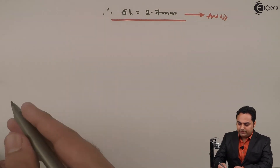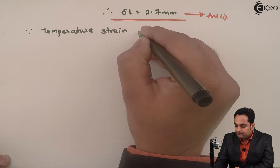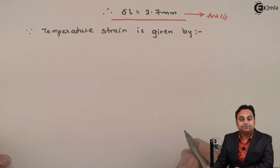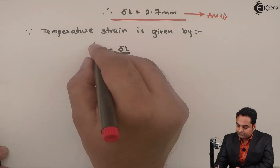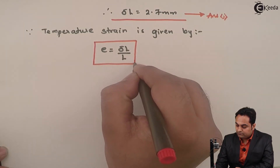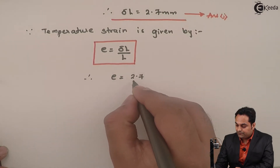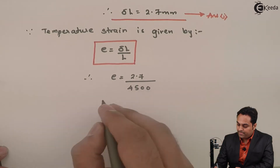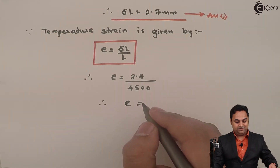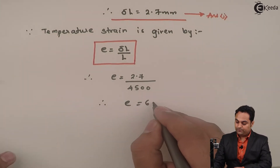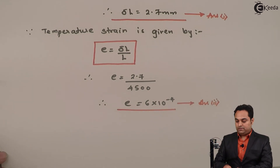After getting the free expansion, the next question is to calculate the thermal strain or temperature strain. Temperature strain is given by: strain equals change in length upon original length. Therefore strain equals 2.7 divided by 4500 mm. The value of thermal strain is 6 into 10 raised to minus 4. This is the second answer.